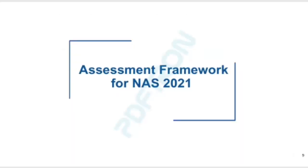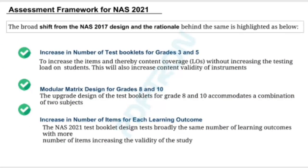Assessment framework for NAS 2021: The broad shift from NAS 2017 design and the rationale behind it is highlighted as follows. First, an increase in the number of test booklets for grades 3 and 5 to increase the items and thereby content coverage without increasing the testing load on students. This will also increase the content validity of instruments. Second, a modular matrix design for grades 8 and 10, where the upgraded design of test booklets accommodates a combination of two subjects.